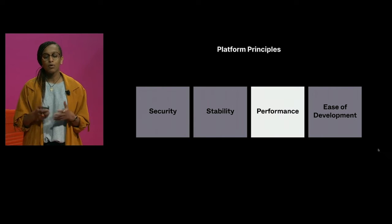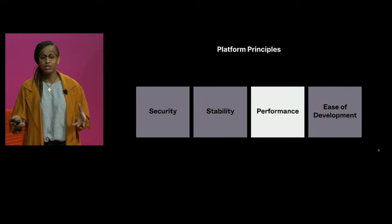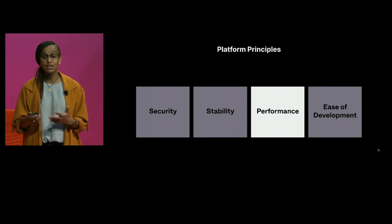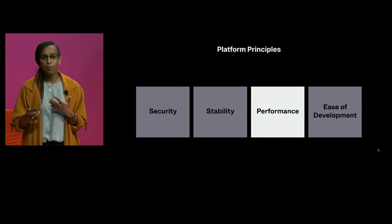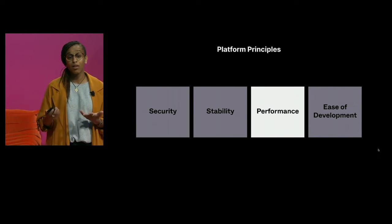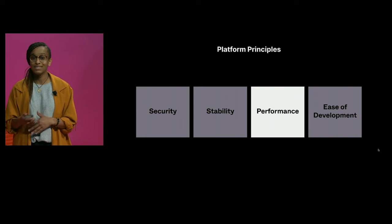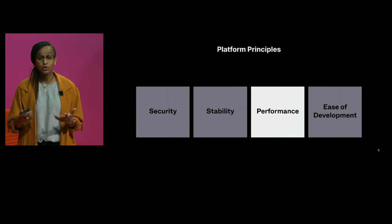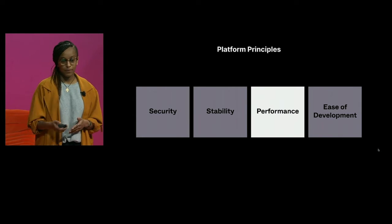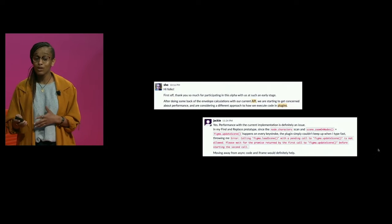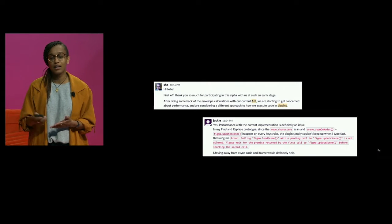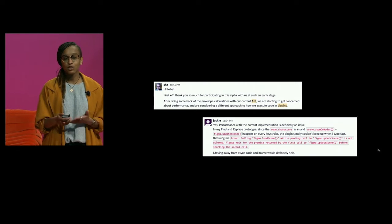Good performance was another priority. We wanted extensions to run really fast — simple things quickly, while more complex operations might take a bit longer. We also wanted to make sure Figma's performance didn't suffer when we introduced extensions, since even a tiny performance hit per plugin could really add up across multiple installed plugins. Upholding this principle proved more challenging than expected, and we actually did a huge rewrite of our plugin platform halfway through our alpha because the initial architecture just wasn't performant enough.